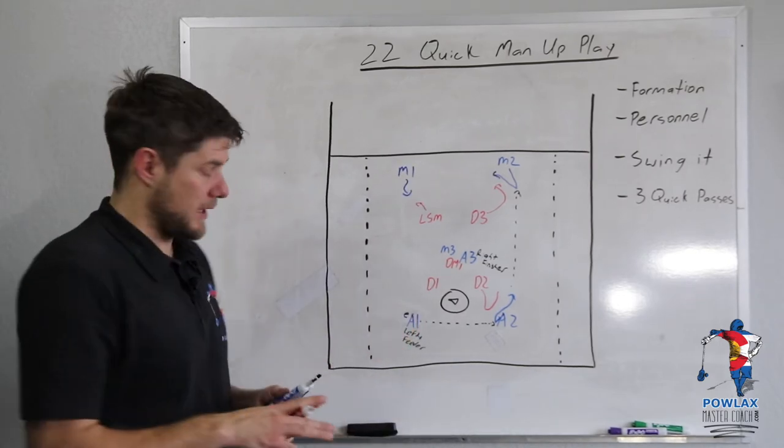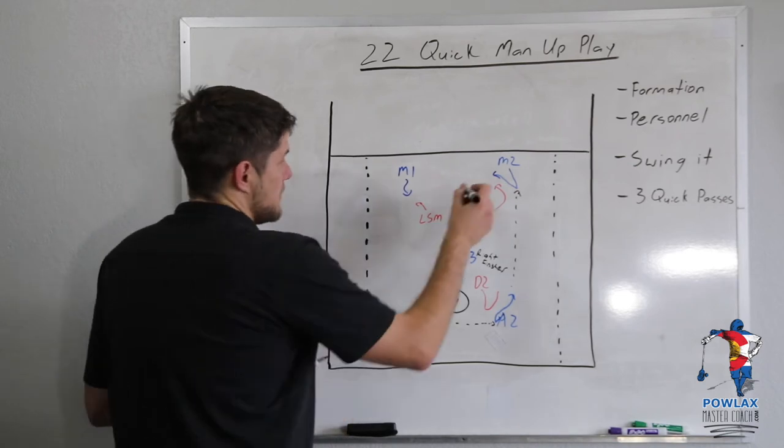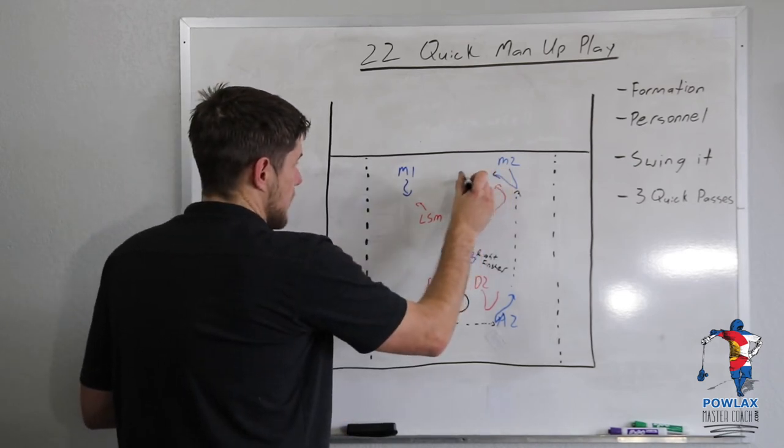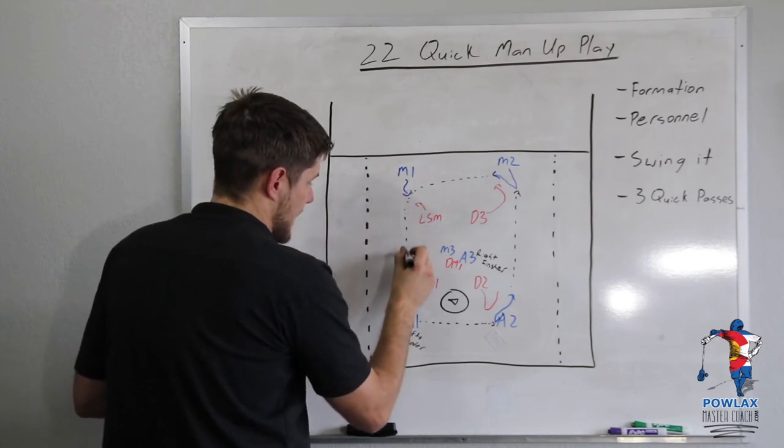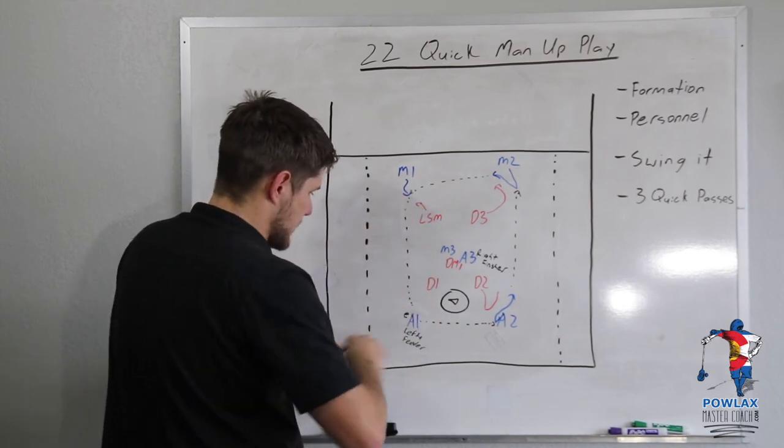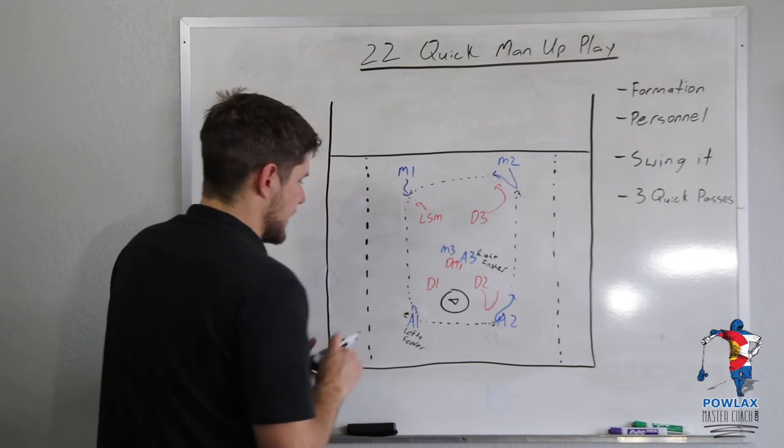So let's just show what that looks like. So M2 still has the ball. He's going to move the ball to M1 who's going to draw the LSM out. M1 is going to move it fast to A1 who will most likely come upfield a little bit to get an extra angle.